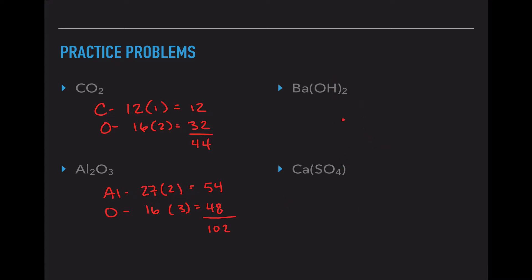Now these two examples have parentheses, so we're going to treat the parentheses a little bit differently. This Ba(OH)2 has the two outside the parentheses, so we're actually going to distribute that in. Barium has an atomic mass of 137 and there's only one present. Oxygen has an atomic mass of 16 and there are two present. And hydrogen has an atomic mass of 1 and there are two present. So 137, 32, and 2. And when I add those up, my atomic mass for Ba(OH)2 is 171 atomic mass units.